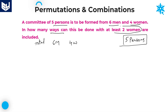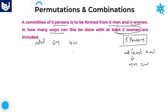The condition given is: in how many ways can this be done with at least two men included? 'At least' means minimum. So minimum two men must be included. Maximum we can take four women, since there are only four women available. There are several possibilities for this question.